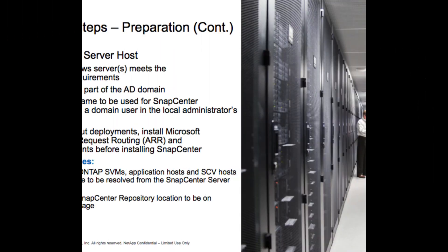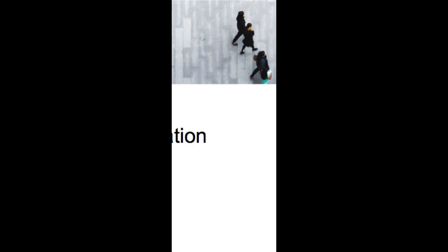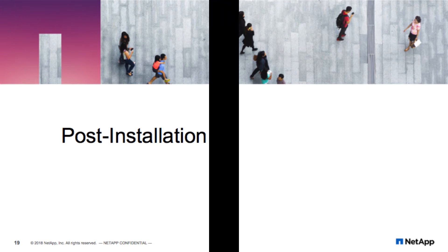Now that we know the storage systems are ready, let's verify our SnapCenter server — or servers if using high availability — are ready. Don't forget that for enterprise production environments, we should make sure the repository location is on protected NetApp storage. Once the installation of the SnapCenter server software is complete, some follow-up steps are necessary to call this implementation successful.